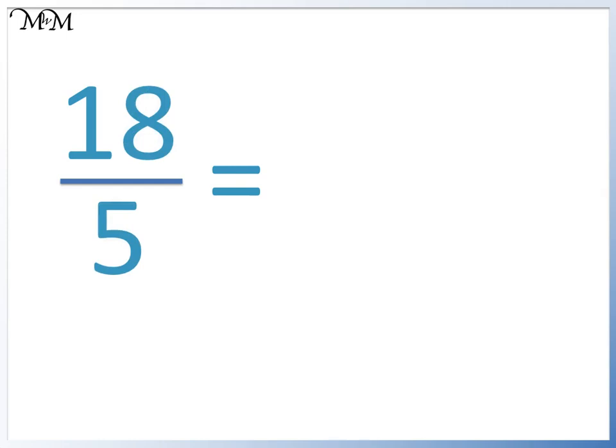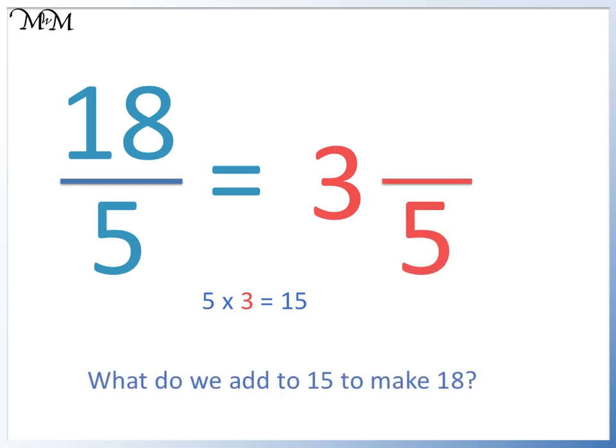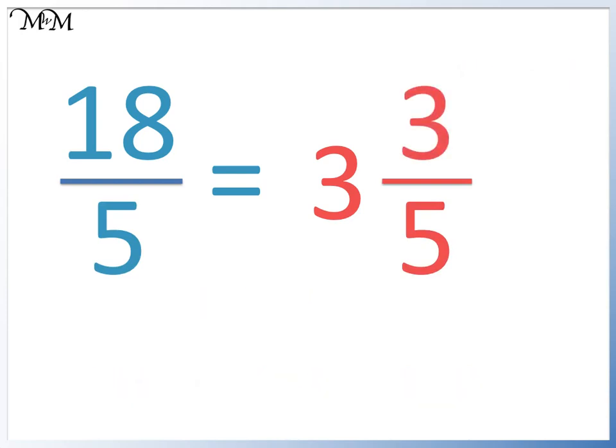18 out of 5. How many times does 5 go into 18? 5 times 3 equals 15. The denominator will be 5. What do we add to 15 to make 18? We add 3. We have 3 and 3 fifths.